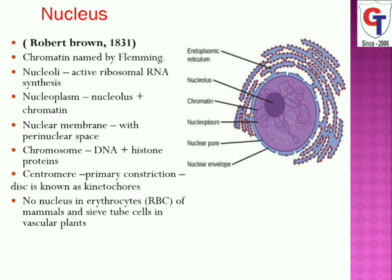The nucleus contains genetic material in the form of chromosomes. In prokaryotes, genetic material is present in the form of nucleoids because no true nucleus is present. Eukaryotic cells usually contain a single nucleus. In animal cells it is located in the center, while in plant cells it is located near the periphery due to the presence of vacuoles.